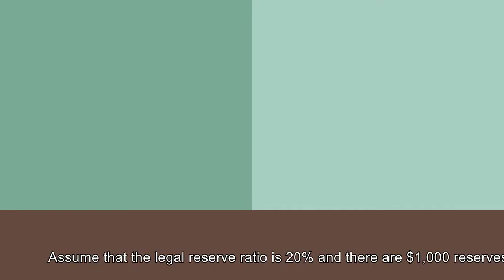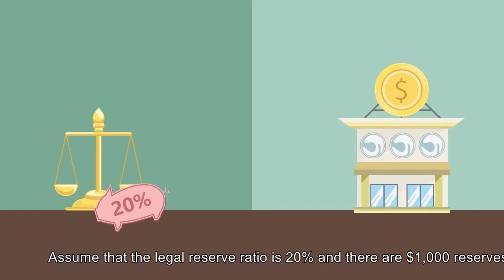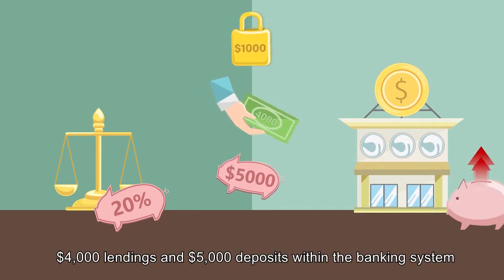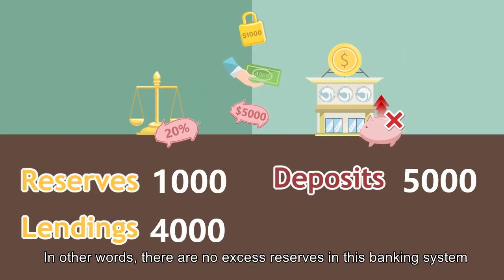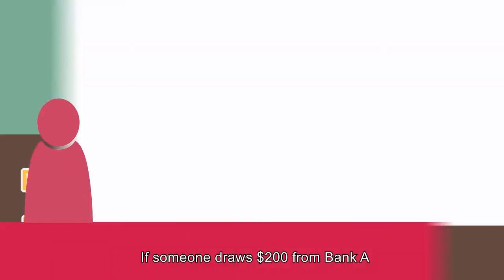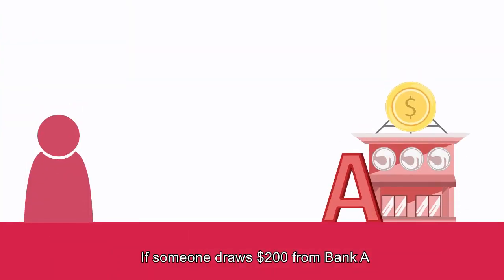We're now going to see an example. Assume that the legal reserve ratio is 20% and there are $1,000 reserves, $4,000 lendings, and $5,000 deposits within the banking system. In other words, there are no excess reserves in this banking system.